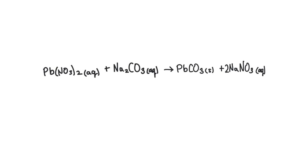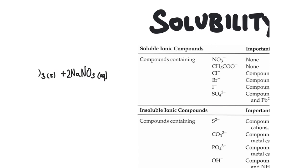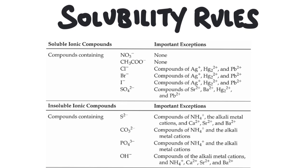So how did I know that lead carbonate was going to be a solid? There's a set of rules we can follow to know what kind of compounds are going to dissolve — which will be aqueous and which will not. If a compound is soluble, the substance will dissolve in water. If it is insoluble, the substance will not dissolve in water. Soluble means aqueous; insoluble means solid.